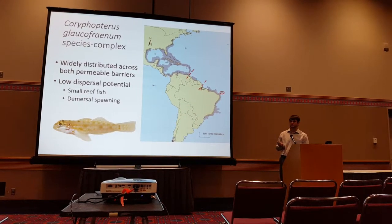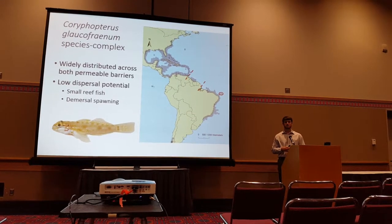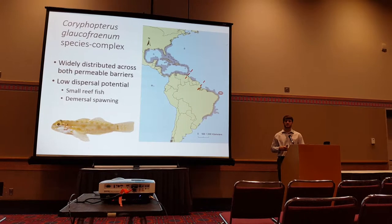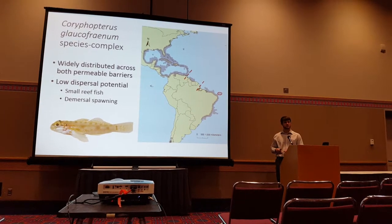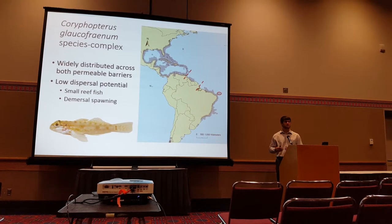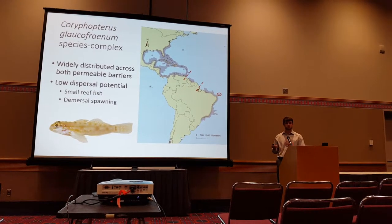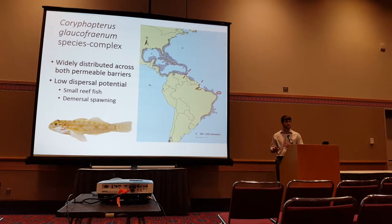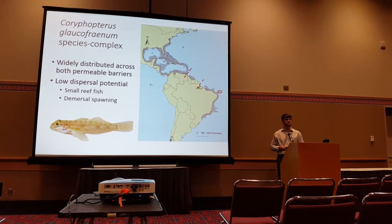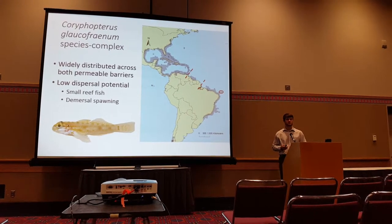In contrast to pelagic spawning taxa that broadcast spawn, these are demersal spawning taxa, which means that they lay their eggs directly on the substrate and are presumably less influenced by ocean currents toward passive dispersal. These several traits combined suggest that they have limited dispersal potential, which means that they may be largely impacted by these oceanographic barriers.